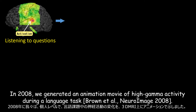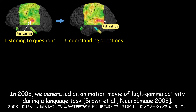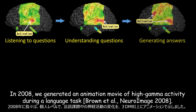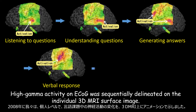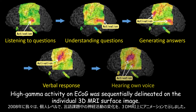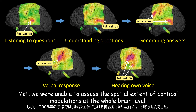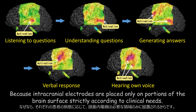In 2008, we generated an animation movie of high gamma activity during a language task. High gamma activity on ECoG was sequentially delineated on the individual three-dimensional MRI surface image. Yet, we were unable to assess the spatial extent of cortical modulation at the whole brain level, because intracranial electrodes are placed only on a portion of the brain surface strictly according to the clinical needs.